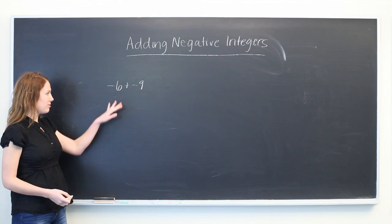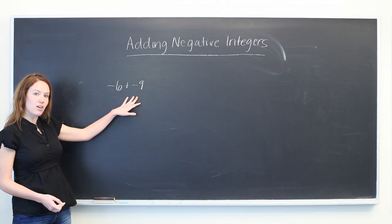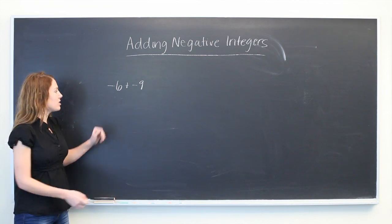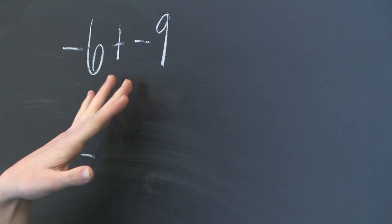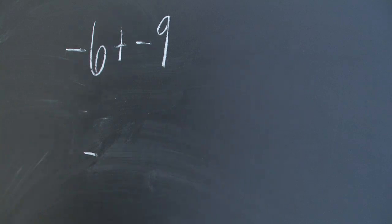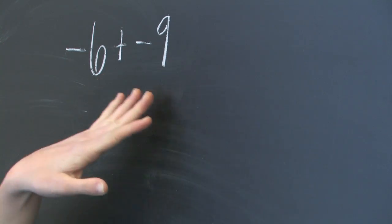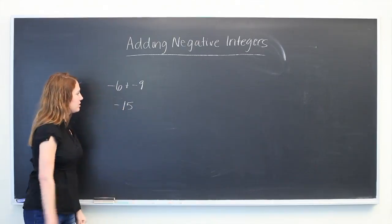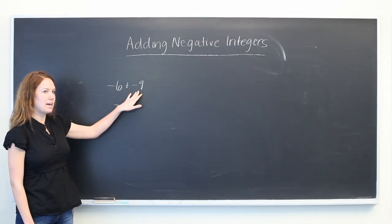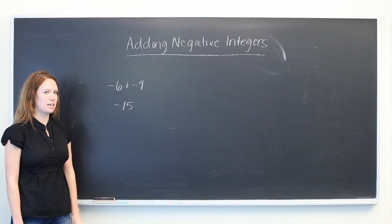So what you can do if both of your signs are negative is actually just carry down that negative in your answer and then pretend like both of the numbers are positive. So 9 plus 6 is 15. So negative 6 plus negative 9 is equal to negative 15.